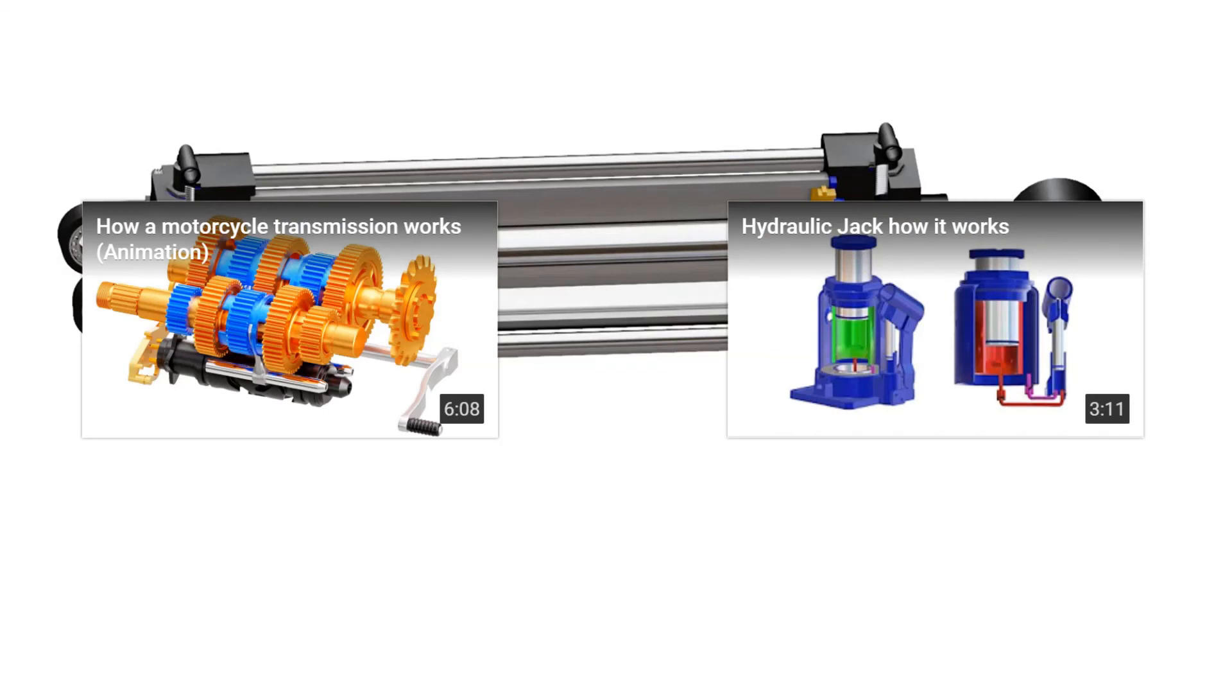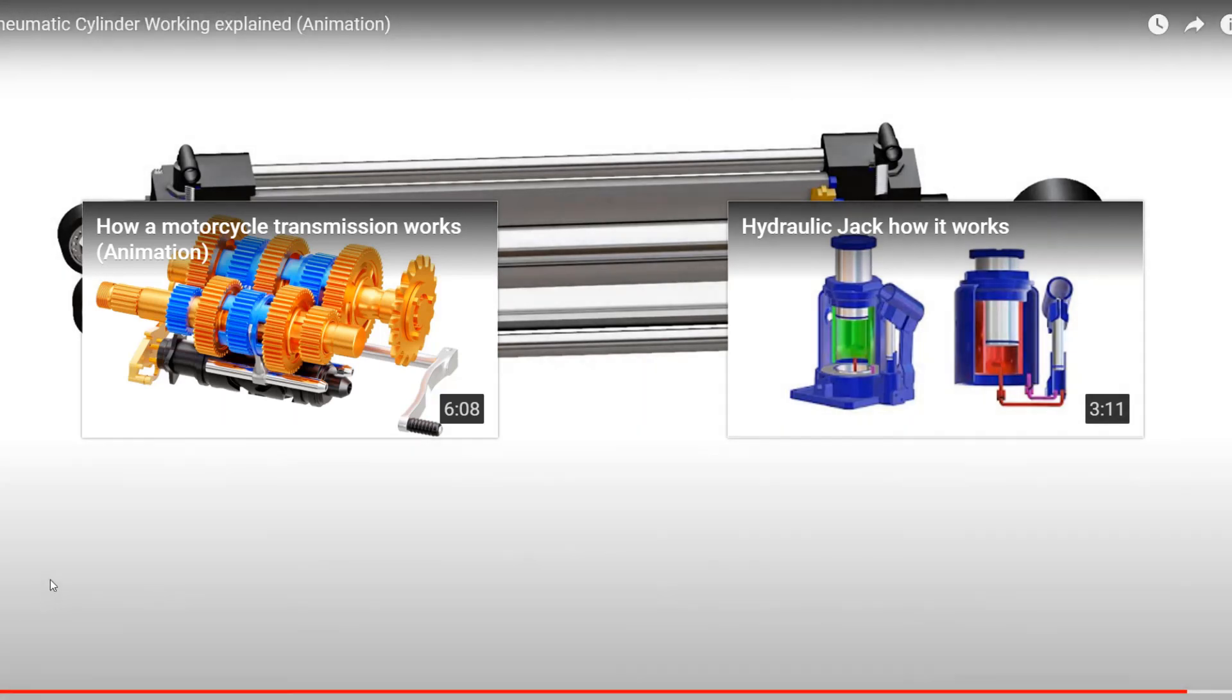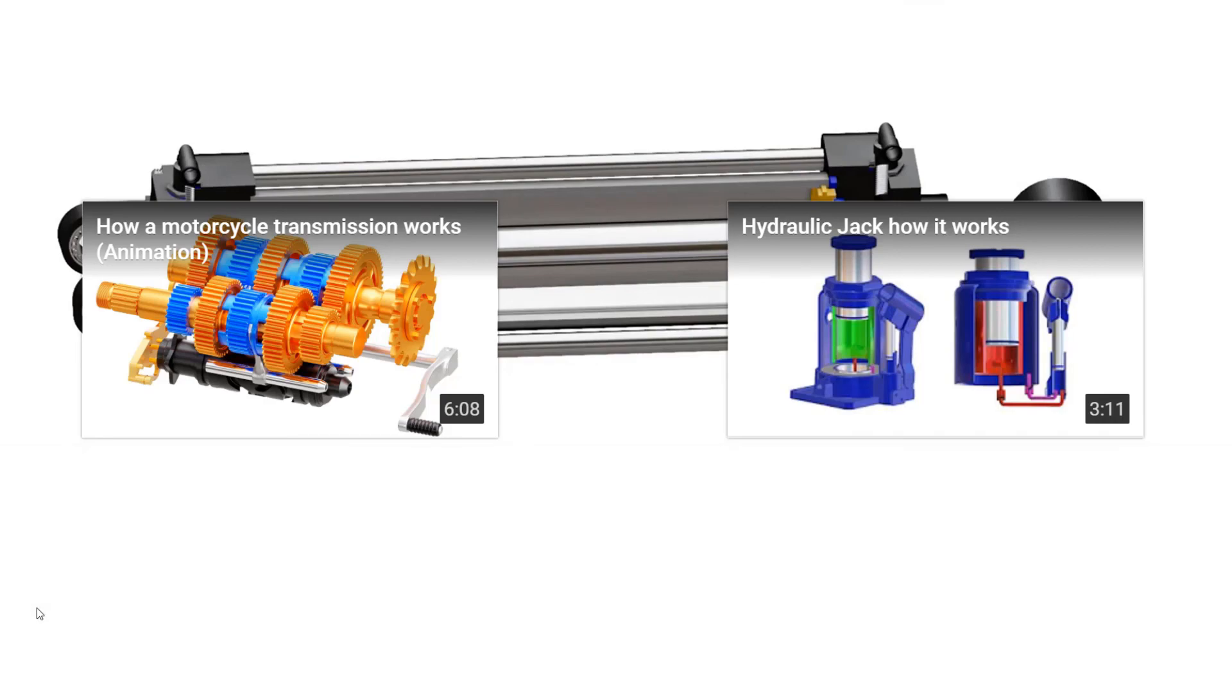Frictional losses on the interface of different surfaces also needs to be considered while designing pneumatic cylinder. The diameter of rod and length of stroke is also a determining factor for capacity of actuator.